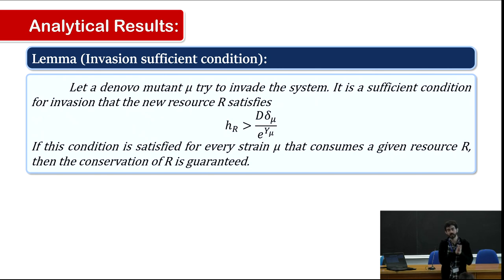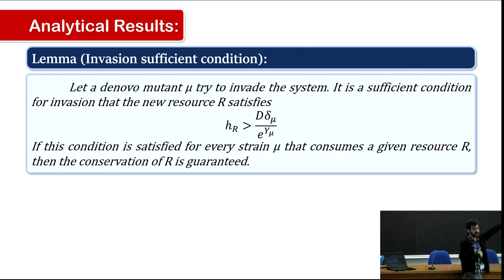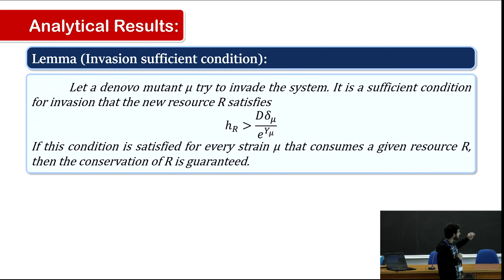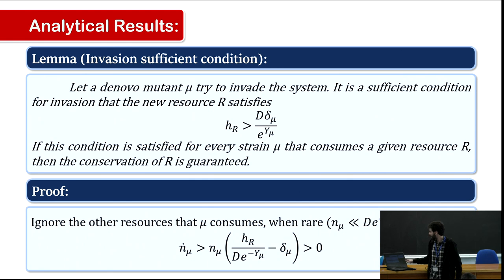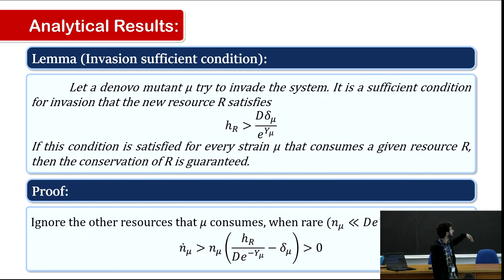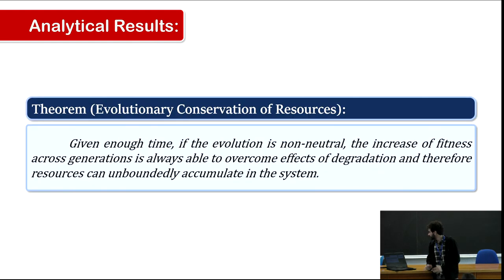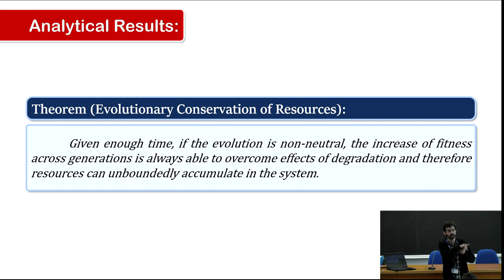There's another result: a sufficient condition for invasion of a new resource. If the inflow a_i of that new resource is greater than a given threshold for that species, it will invade. This condition leads to an important evolutionary result: if we have fitness evolution, we can always increase the number of species in the system.